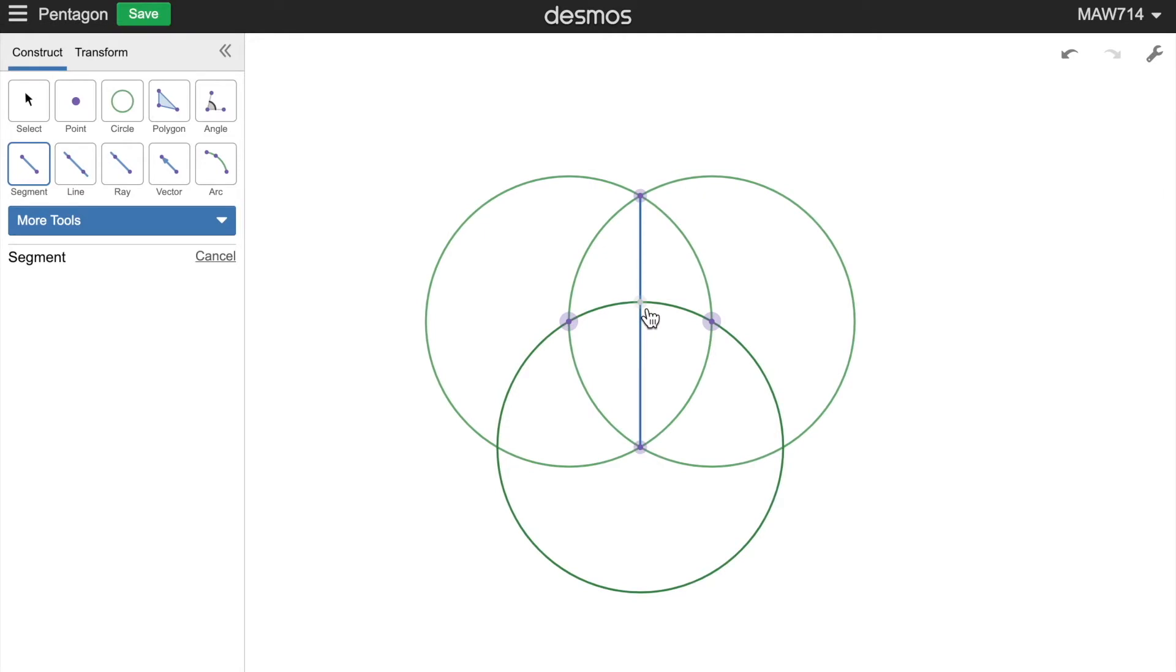We can now connect this point with these two points with the rays, like this. Then we get these two points.